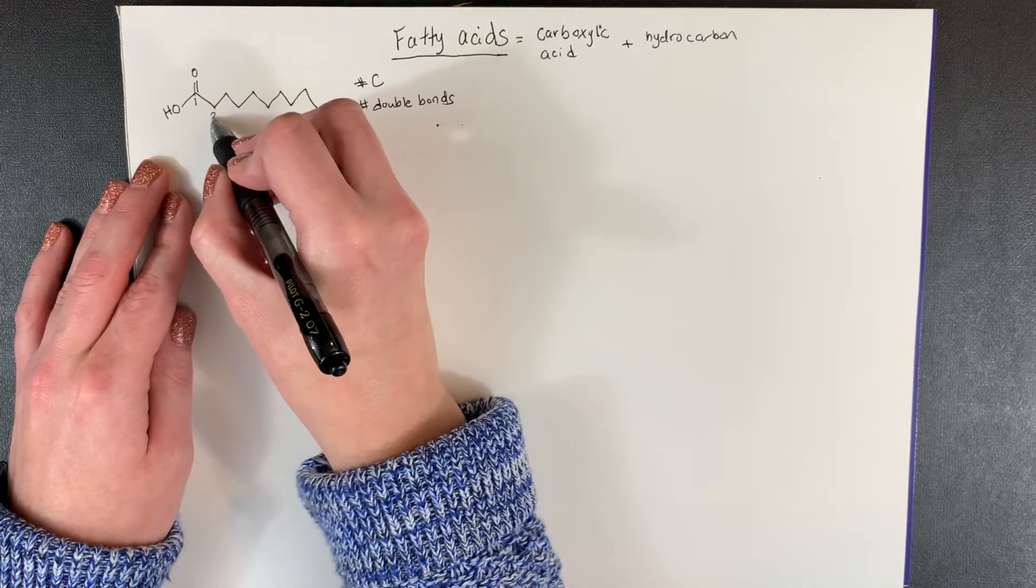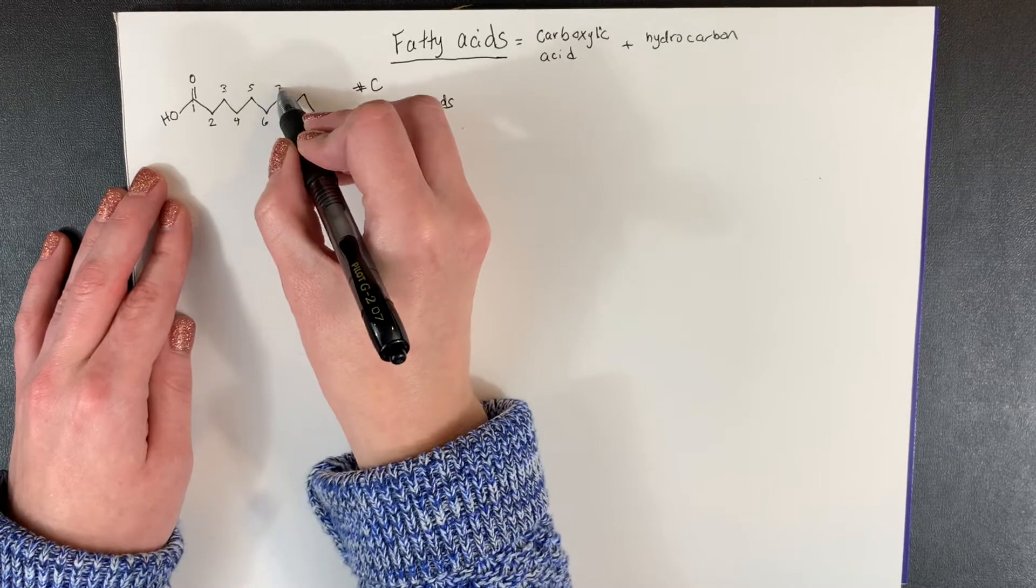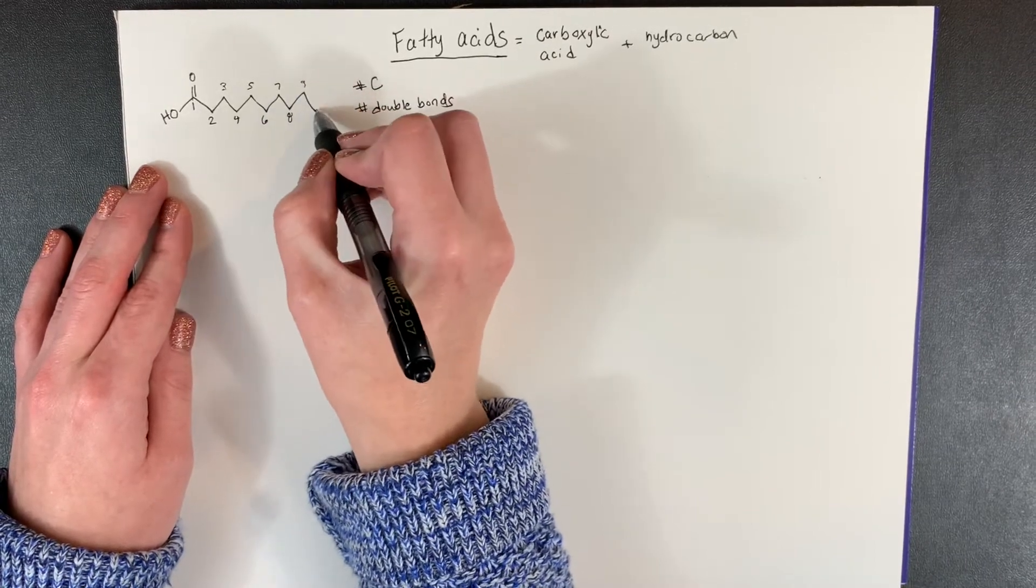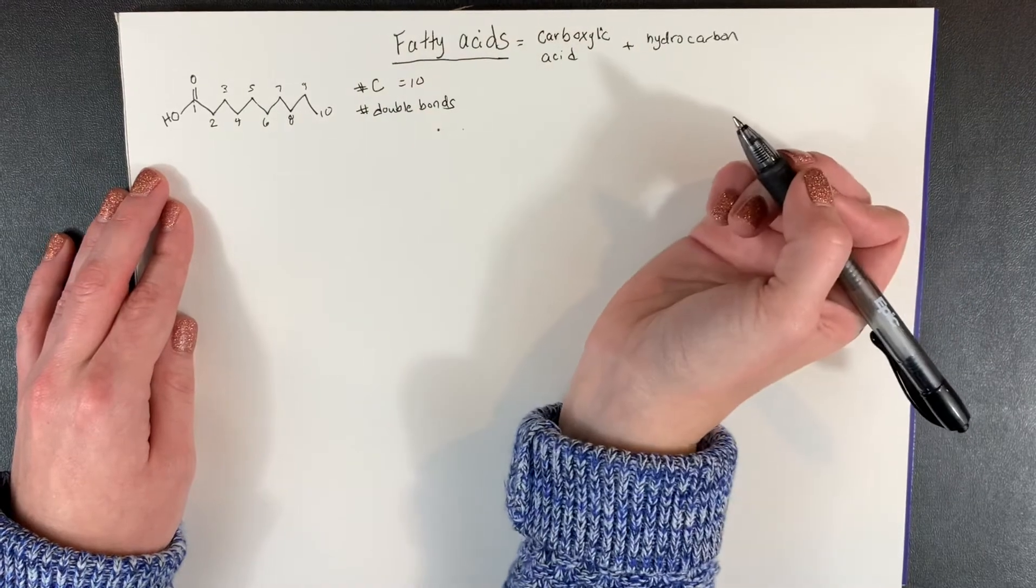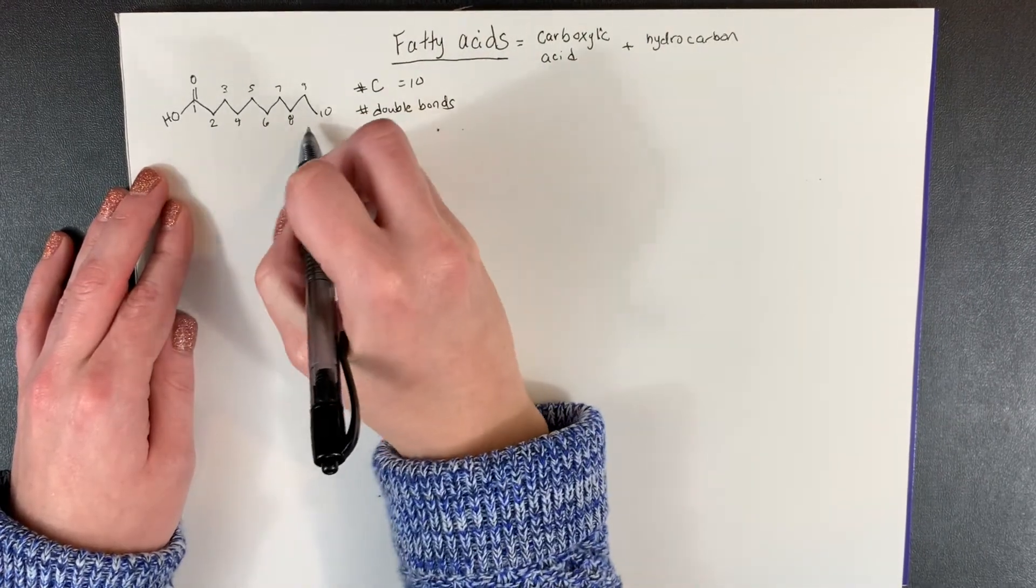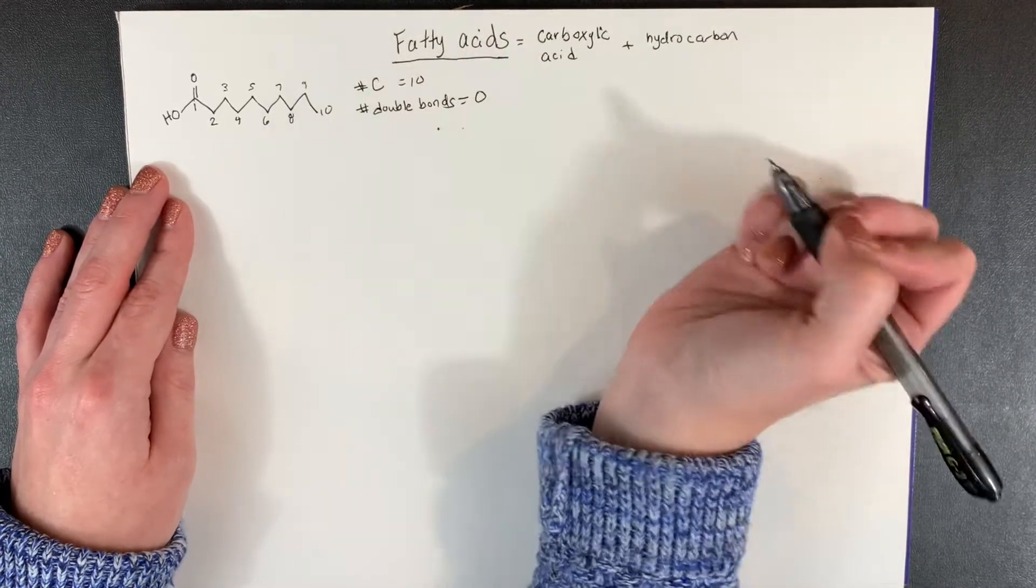So we'll start here. We have one, two, three, four, five, six, seven, eight, nine, 10 carbons. All right, we have 10 for that. And then if you look at this hydrocarbon chain, we have no double bonds. This number would be zero.